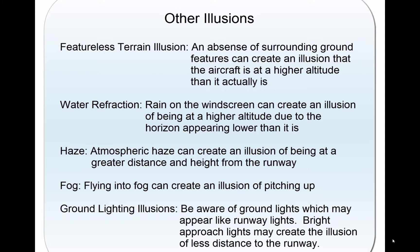Haze. Atmospheric haze can create an illusion of being at a greater distance and height from the runway. As a result, the pilot will have a tendency to be low on the approach. Conversely, extremely clear air and bright conditions of a high altitude airport can give the pilot the illusion of being closer than he or she actually is, resulting in a high approach, which may result in an overshoot or go-around.